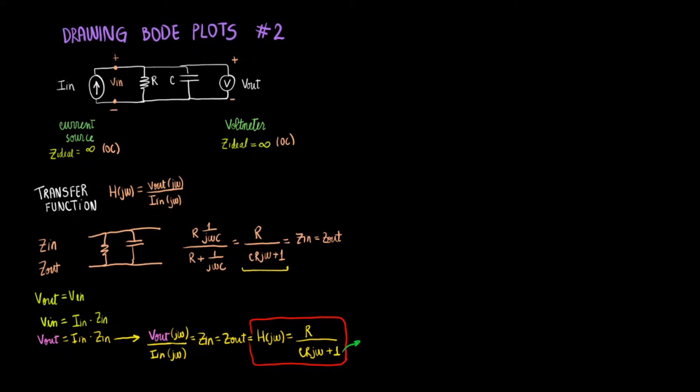So let's go ahead and do that. So there will be no zeros. But we can set C R j omega plus 1 equal to zero and get a pole.